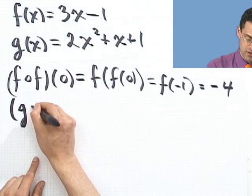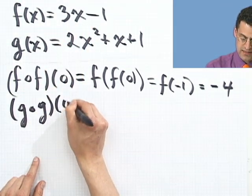How about g composed with g at 0? Why don't you try this one right now? So in fact, why don't you try to figure out what g composed of g evaluated at 0 would equal, given the function g here. Give it a shot.